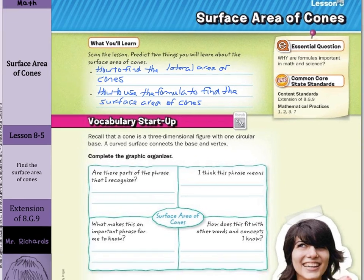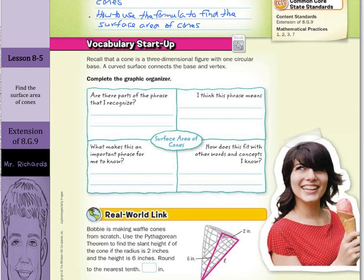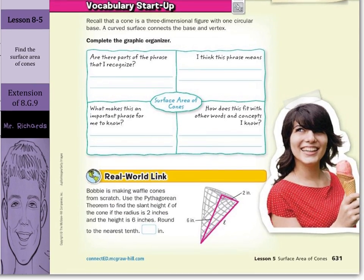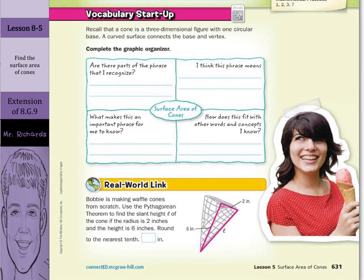And if we go to the bottom of our page with the real-world link, Bobby is making waffle cones from scratch. Use the Pythagorean theorem to find the slant height L of the cone if the radius is 2 inches and the height is 6 inches. Round to the nearest tenth.